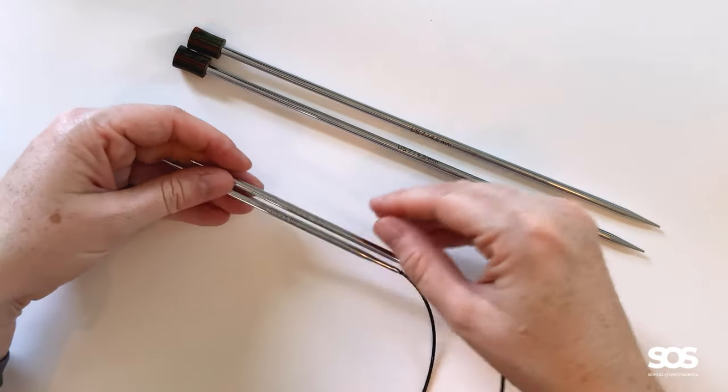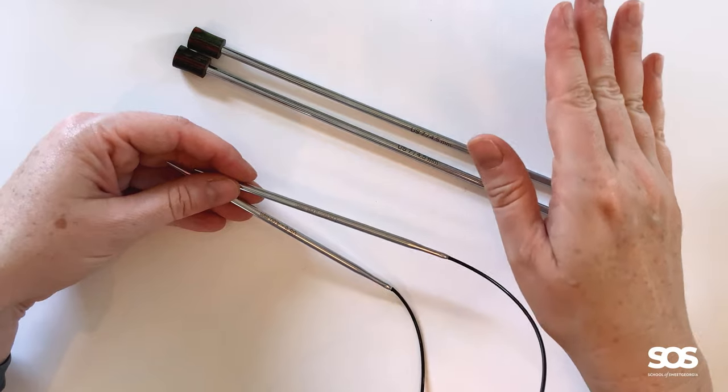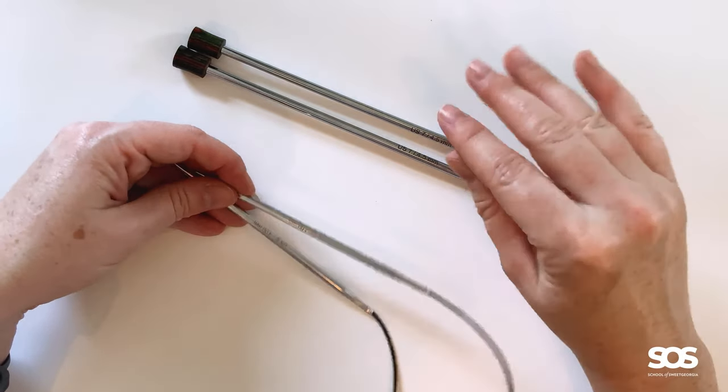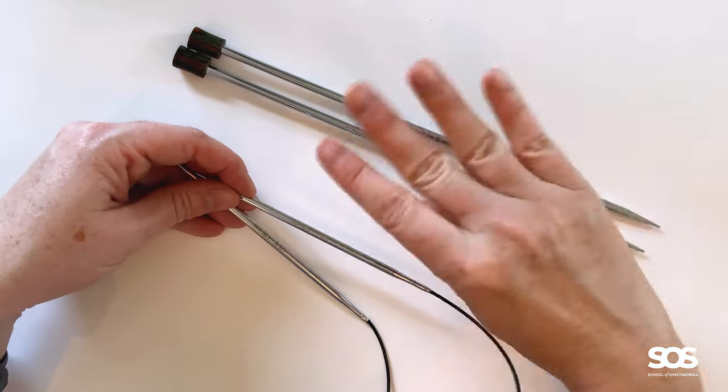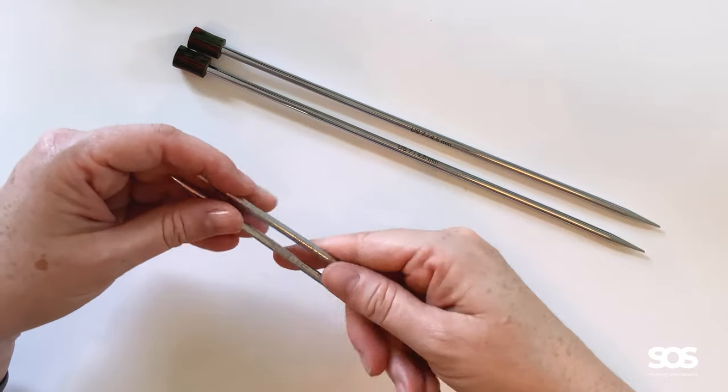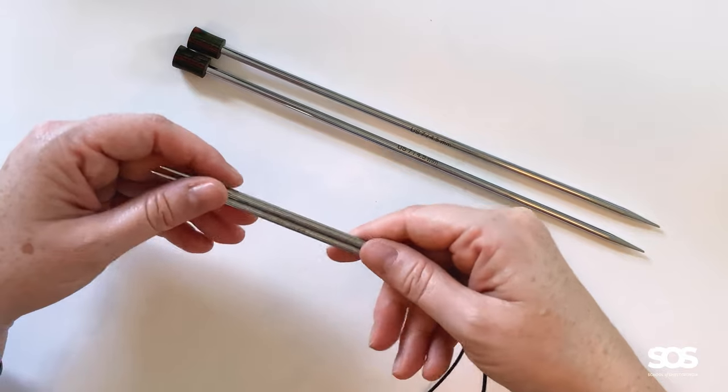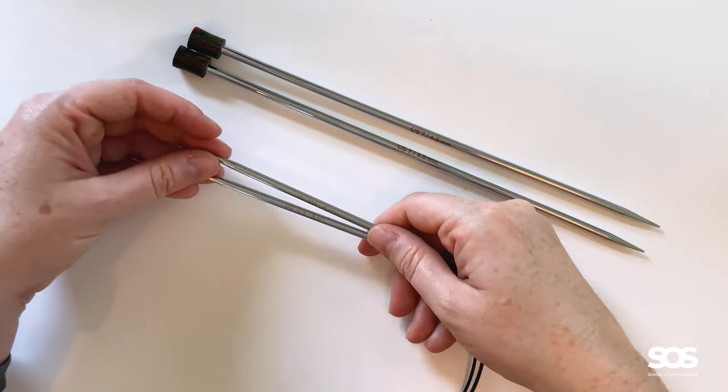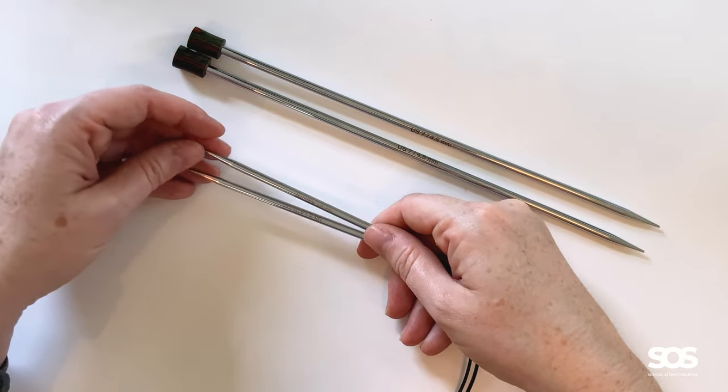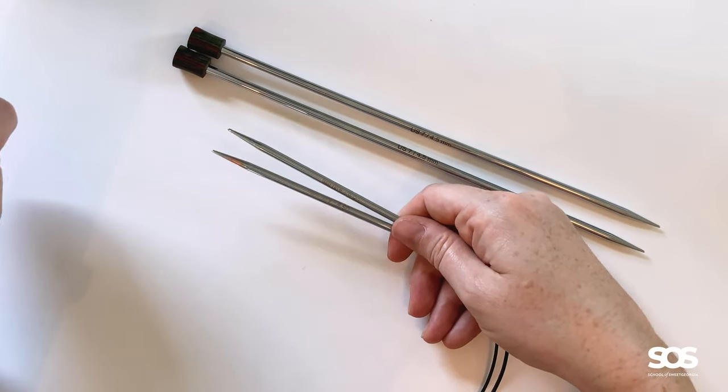I want you to look at getting US size 6 or 4.0 millimeter needles or US size 7 4.5 millimeter needles. Either one will work. I just want to make sure that you have a decent size where it's not too hard to see or not too big to handle. So look at those two types of needle sizes and choose whichever one feels right to you.